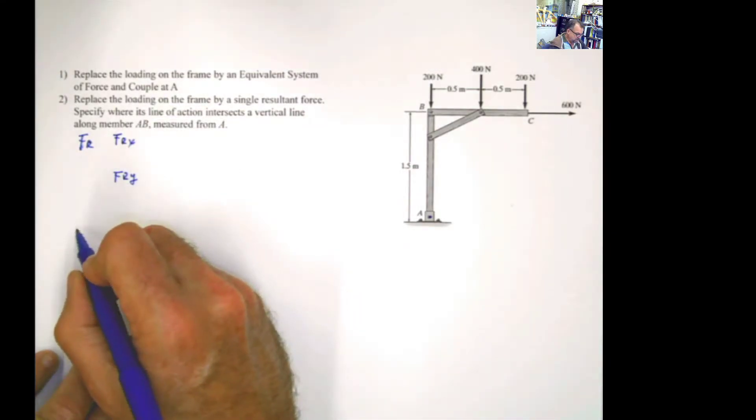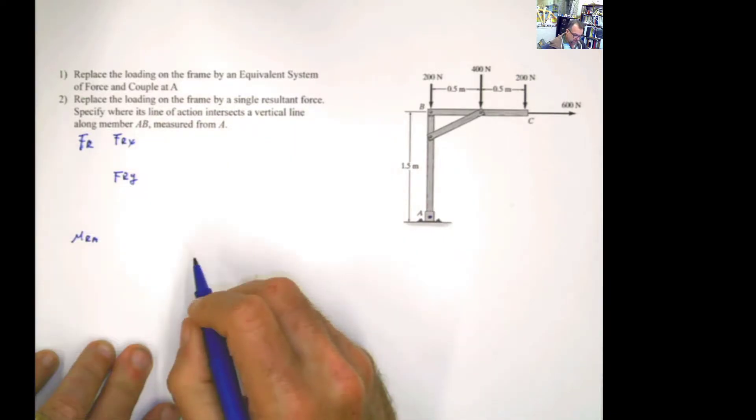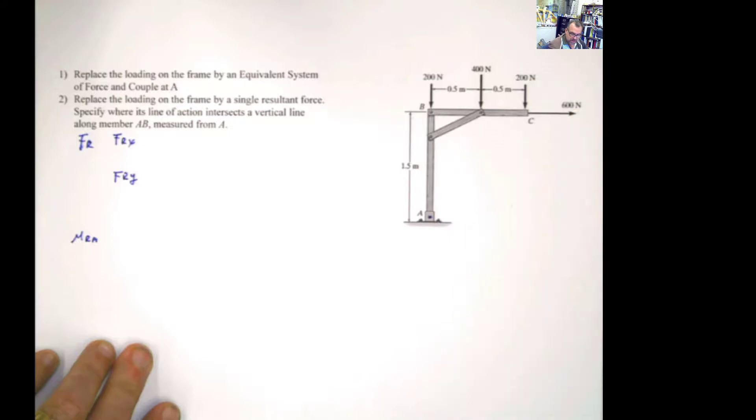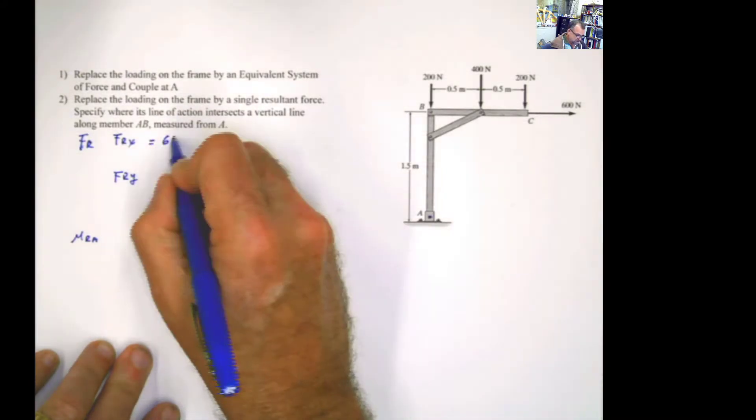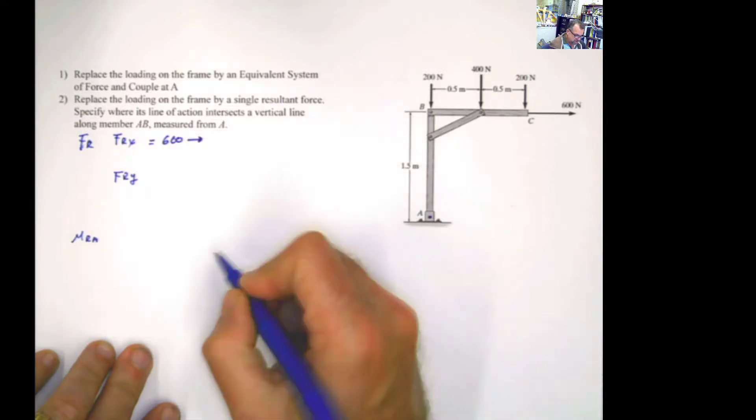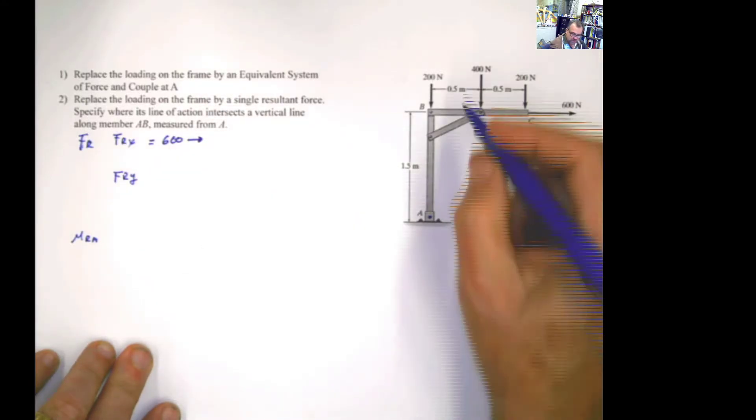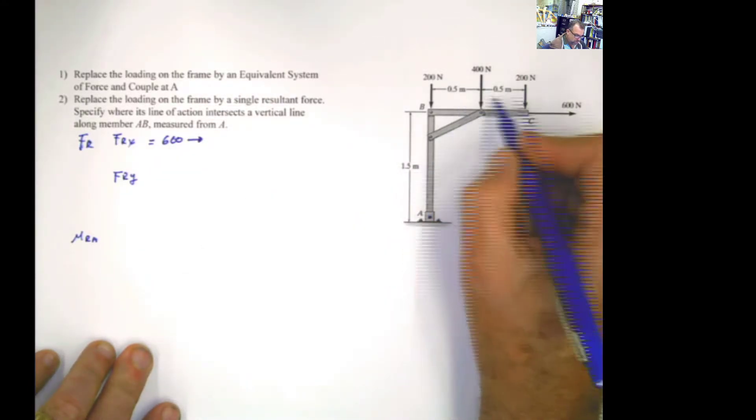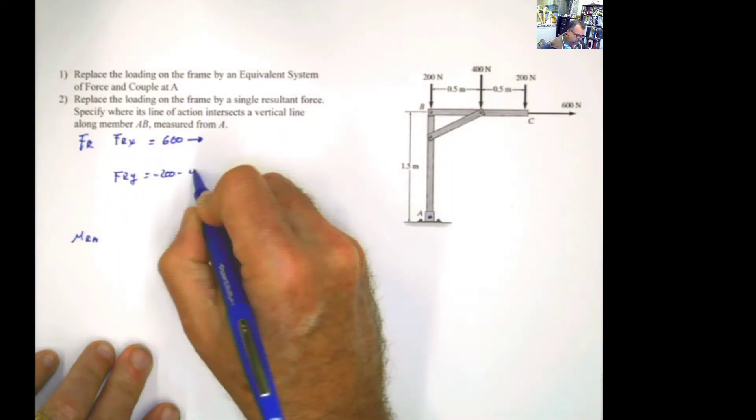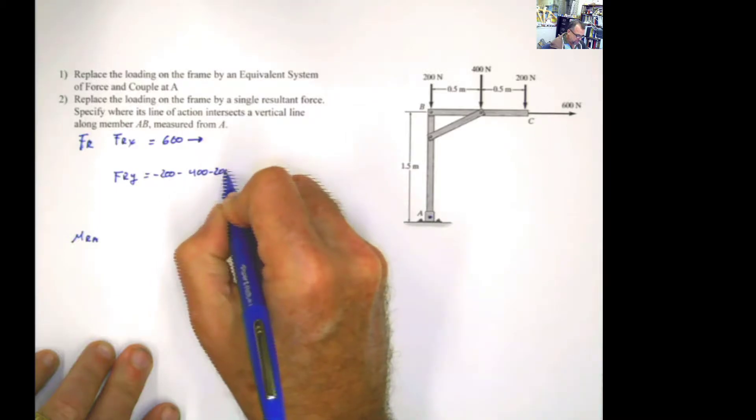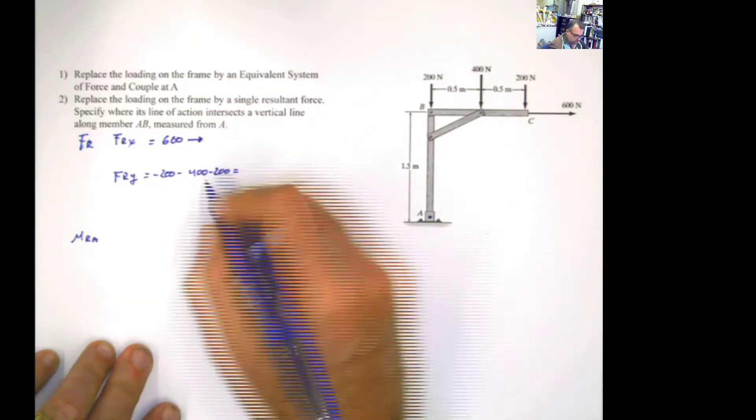So let's find the moment at A, resultant moment at A. In x, what do you have in x here? The only thing that you have in x is this force, 600 newton, acting in this direction. What about in y? In y, you have these three forces, meaning negative 200, negative 400, negative 200. And that's going to be equal to 800 newton.